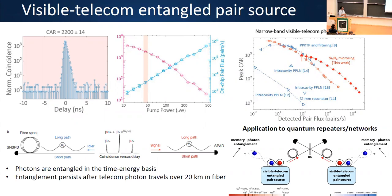These photons can actually be entangled in a time-energy basis. What's interesting is that one photon is at a visible wavelength and the other is at a telecom wavelength. The telecom photon could go across a fiber network while the visible photon goes across a free-space network. You can also use this type of pair source to promote remote entanglement of distant local quantum systems — for example, color center spins entangled with visible photons could become entangled with telecom photons from one of these sources through an entanglement swapping operation, ultimately resulting in remote spins that are entangled.